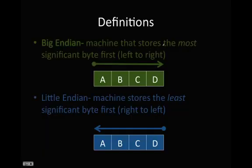Big Endian is a machine that stores the most significant byte first, so the most significant byte first, left to right. It moves left to right, seen by the arrow. Little Endian is a machine that stores the least significant byte first, so it moves right to left.